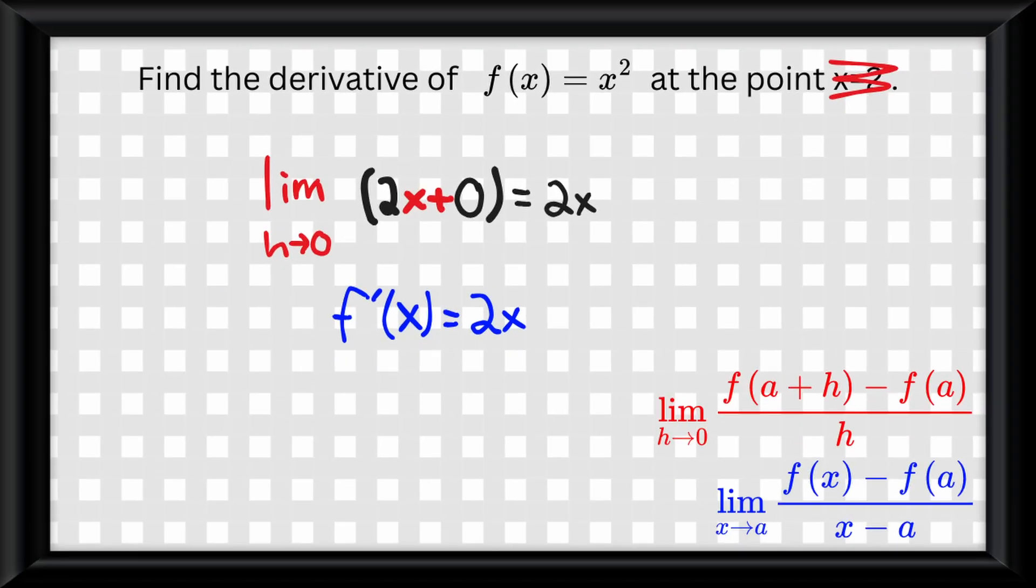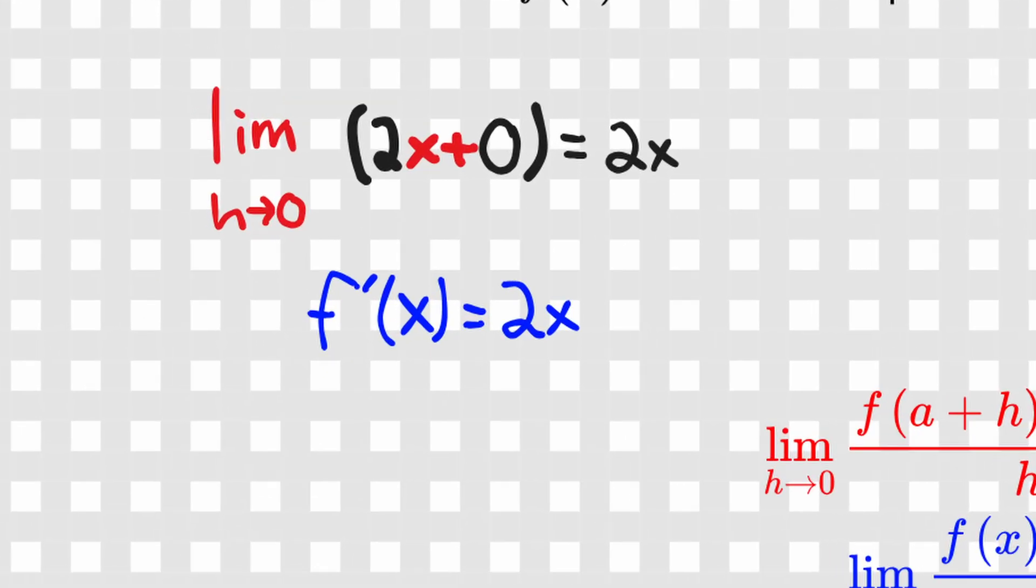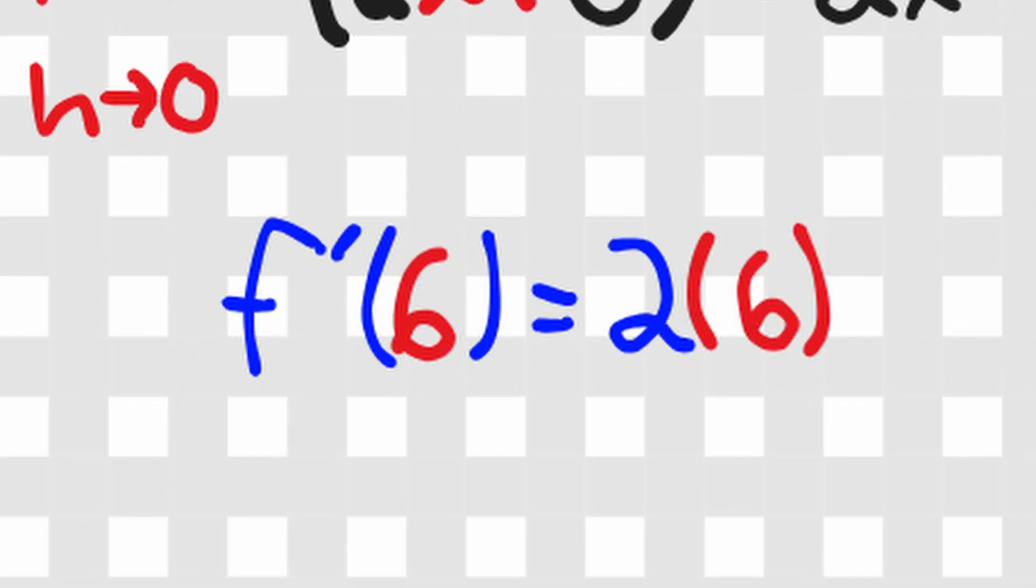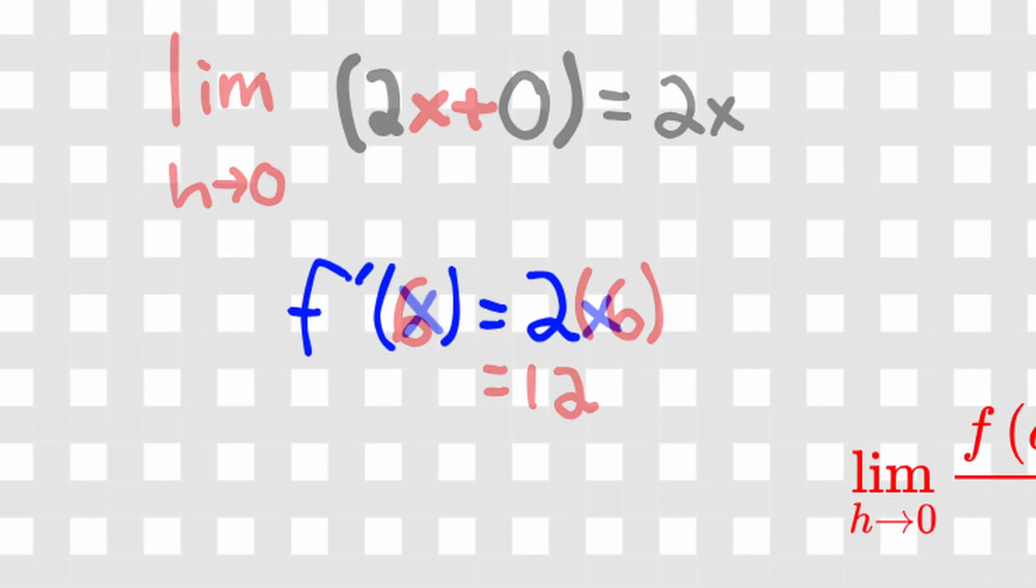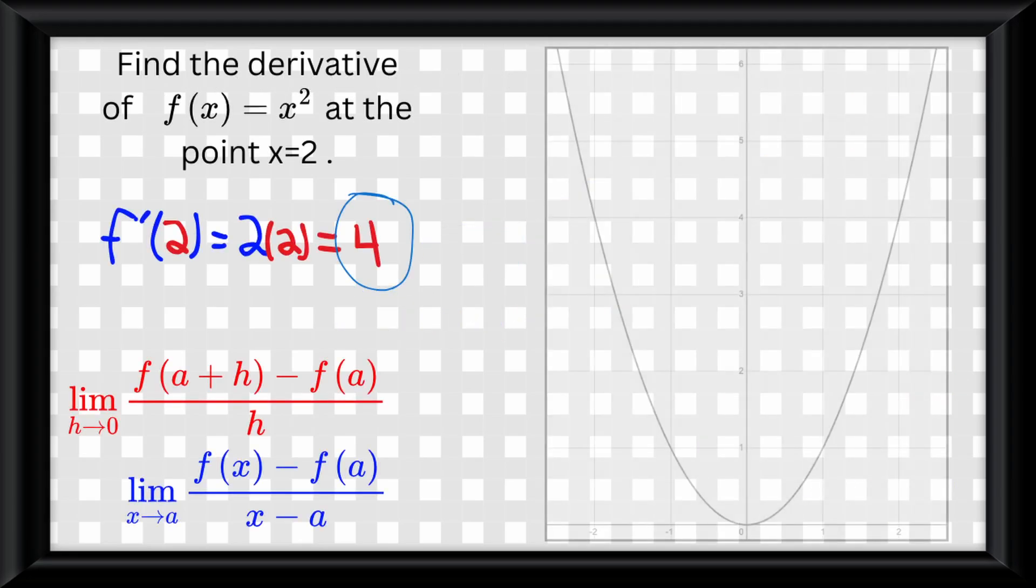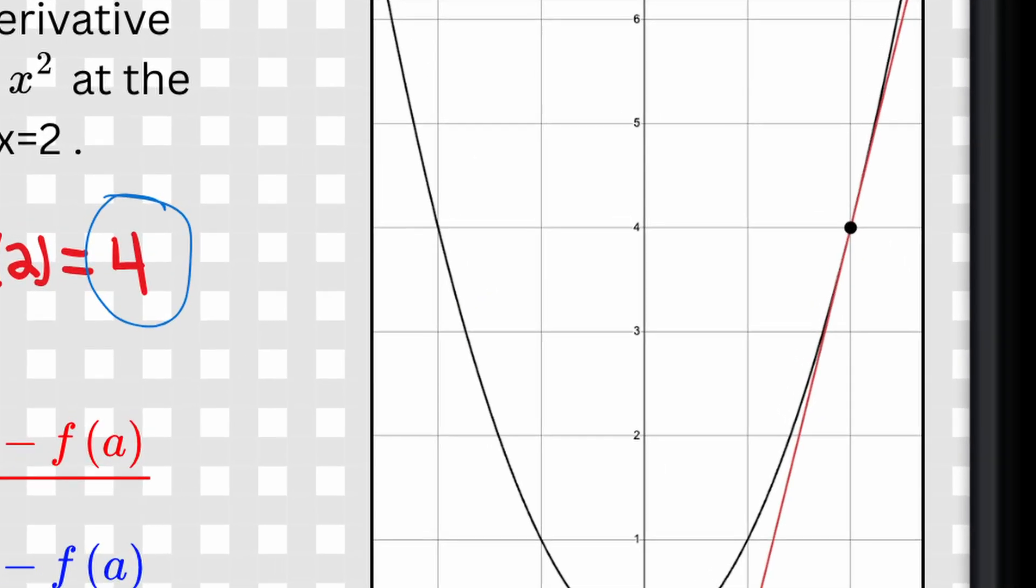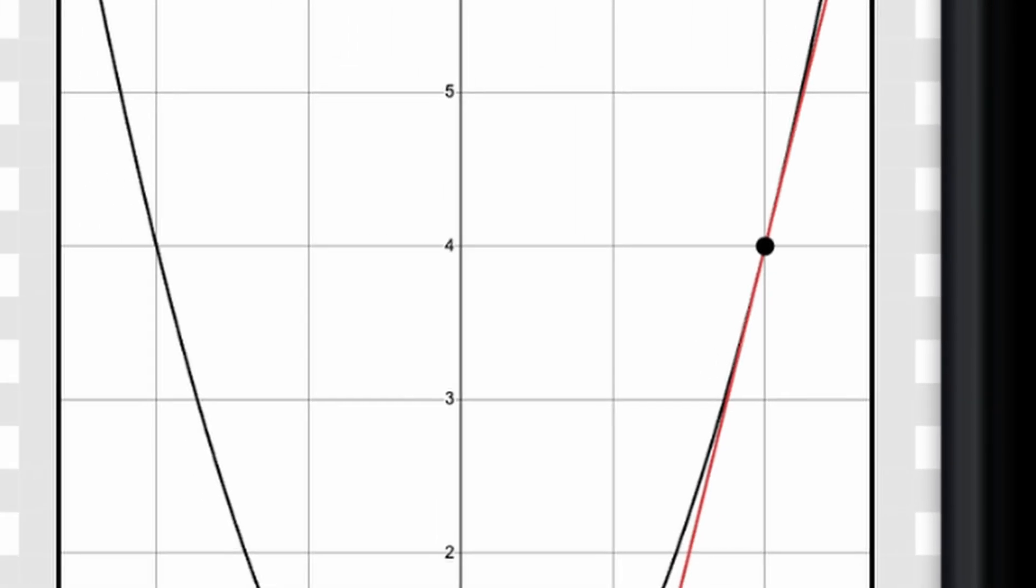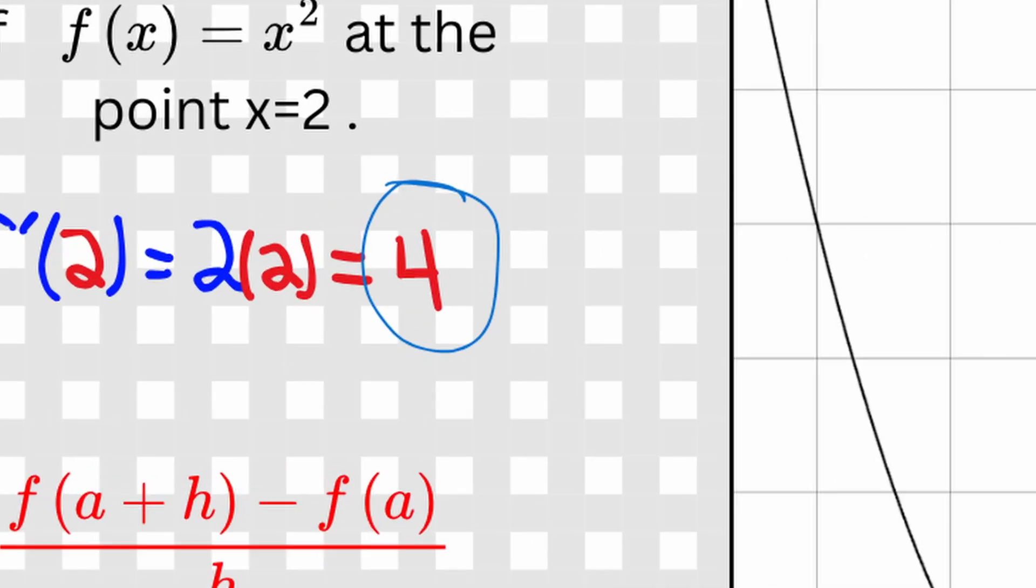So, say I wanted to find the derivative of x equals 6 of y equals x squared. Easy, plug it into the derivative function, and the answer is 12. Going back to our problem from earlier, we plug in 2 and we get 4. If you remember, on the graph, this makes a tangent line only going through that point at x equals 2. The slope of that tangent line, or our derivative, is 4.